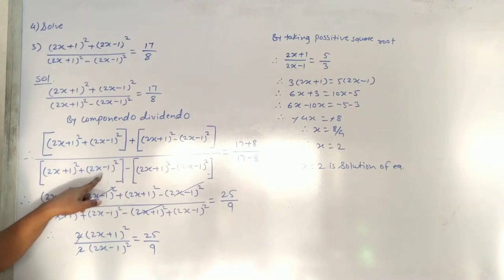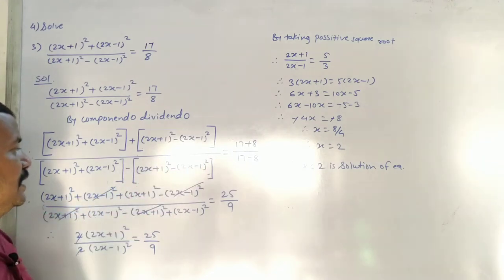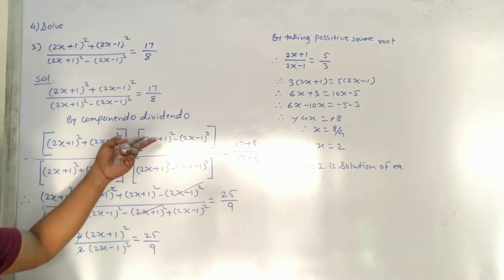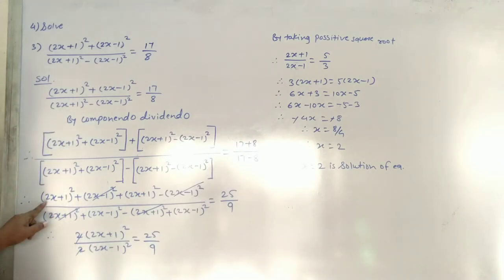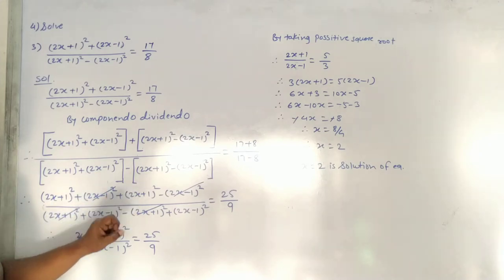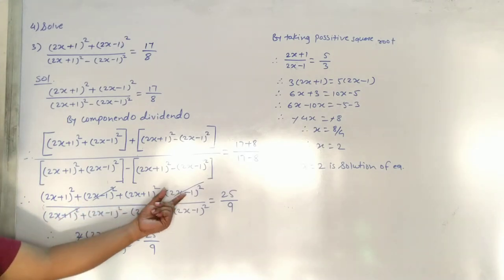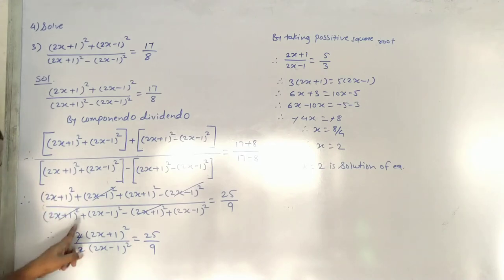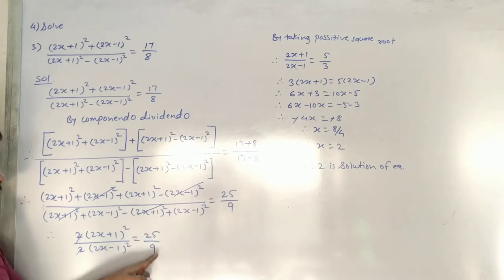(2x+1)² + (2x-1)² minus (2x+1)² minus (2x-1)² is equal to 17 plus 8 over 17 minus 8, which simplifies so that (2x+1)² upon (2x-1)² is equal to 25 upon 9.